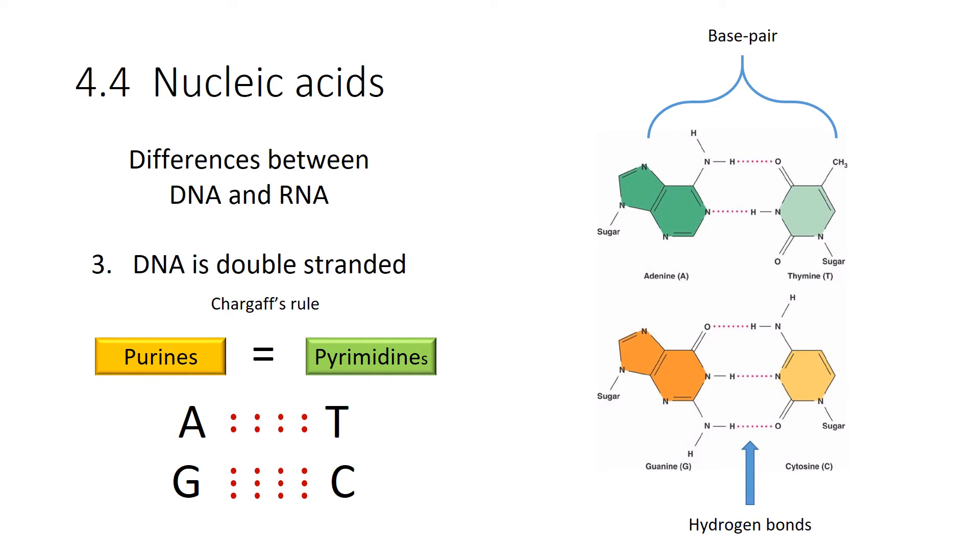That adenine and guanine, they form a double ring structure. Those are purines. And I always remember pure as gold. The pyrimidines are the thymine and the cytosine. So in any stretch of DNA, you always have a purine forming a hydrogen bond with a pyrimidine. And what that means is, 50% of your DNA will always be a purine and 50% will always be a pyrimidine.